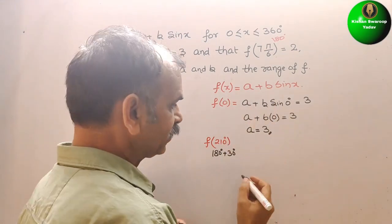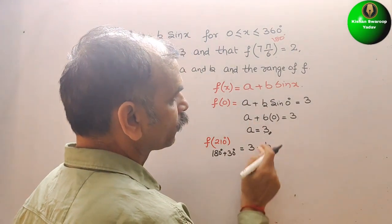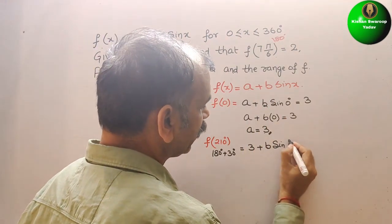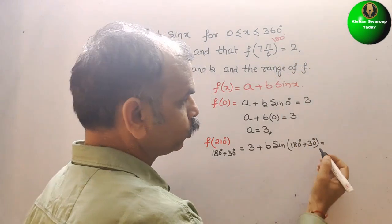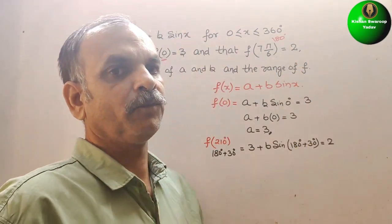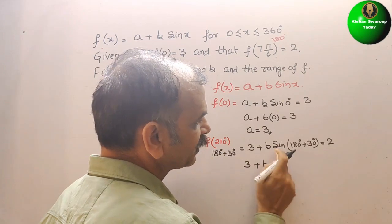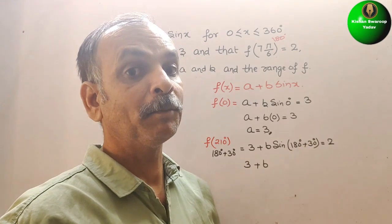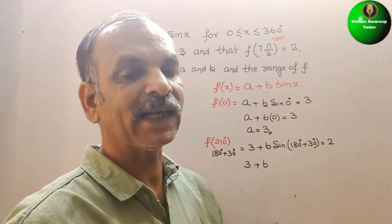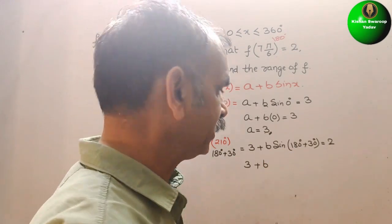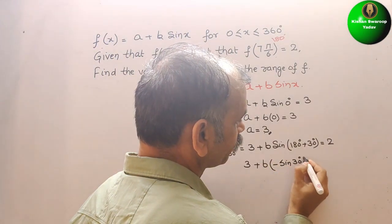We substitute into the function. We get 3 plus b·sin(180° + 30°), and this is equal to 2 as given. Now, sin(180° + θ) equals minus sin(θ), because it falls under the third quadrant, and sine is negative in the third quadrant. So we get minus sin(30°).